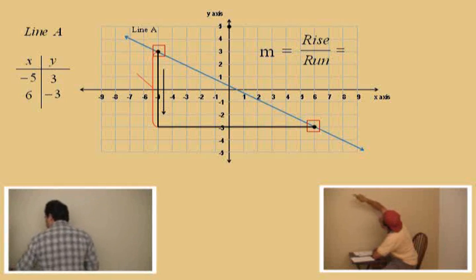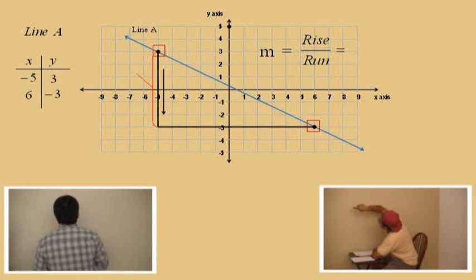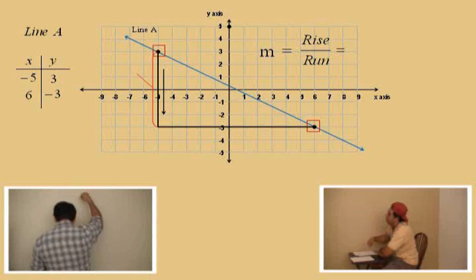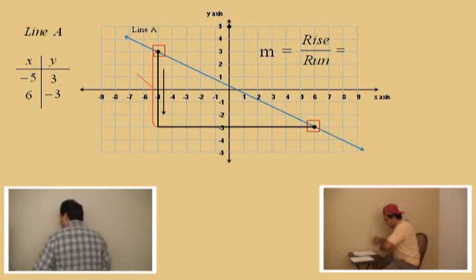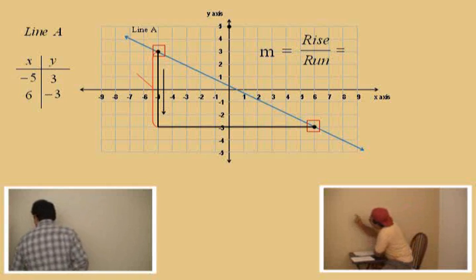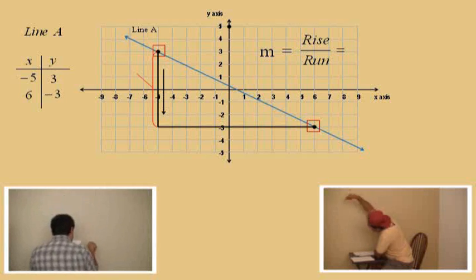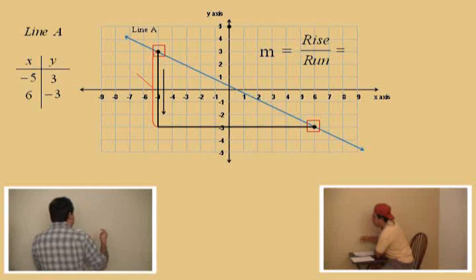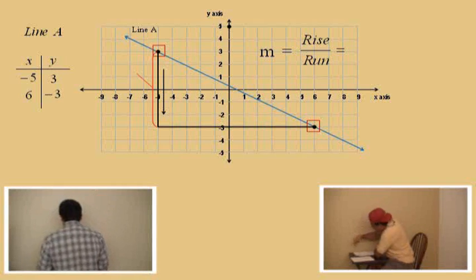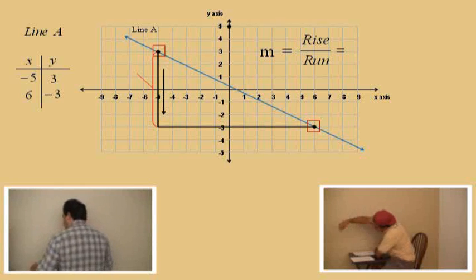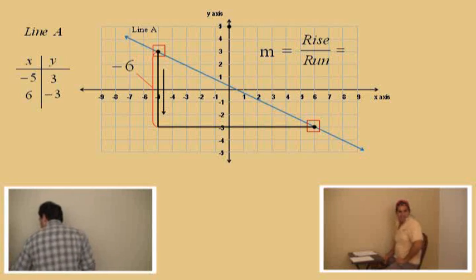So, we're going to start up there at that point. Notice, we have to come down. How many spaces do we have to come down, Charlie? Six. Very good. But because we're coming down six spaces, we say our rise is going to be indicated by negative six. Negative six, very good, because we're coming down.